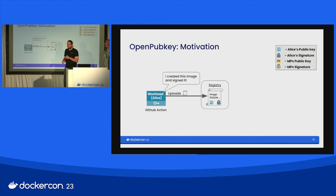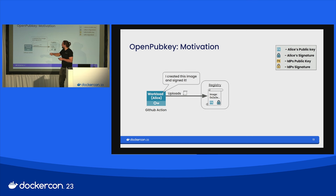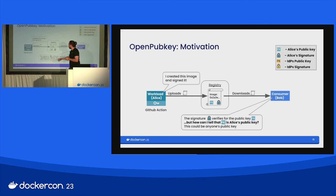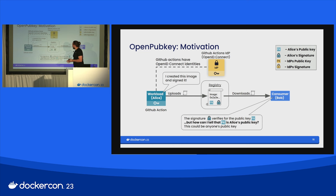Imagine you have some workload — say a GitHub Action — and we're going to name this workload Alice for convenience, but it's not a user in this context, it's just a workload. It creates some image, signs this image, and uploads that image along with Alice's signature and Alice's public key to a registry. Now Bob trusts Alice and downloads the image, the public key, and the signature, but Bob wants to check the signature. Bob has a question: even if the public key verifies for the signature, how does he know this public key is in fact Alice's public key? It could be anyone's public key.